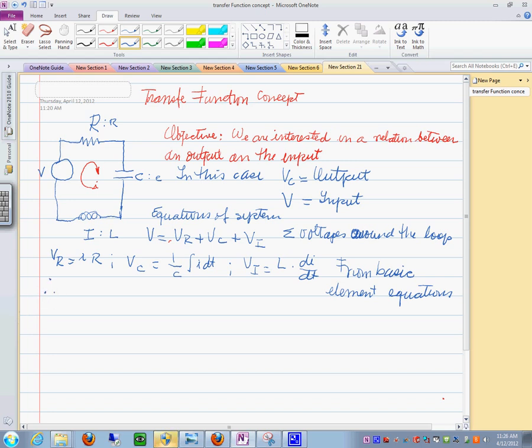Therefore the voltage is equal to I times R plus 1 over C the integral of I dt plus L times dI/dt. Or you could put it in terms of the charge. In terms of Q or charge you could rewrite this as V is equal to dQ/dt times R plus 1 over C times Q plus L times d square Q dt square.